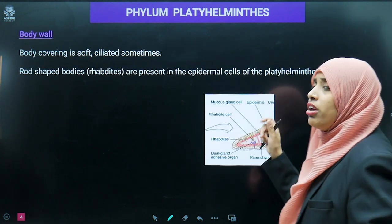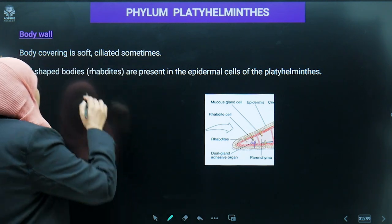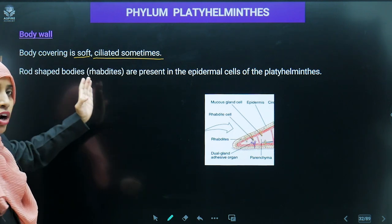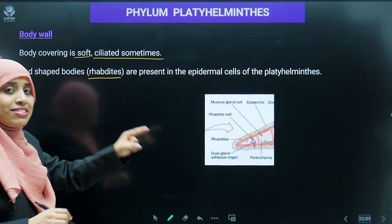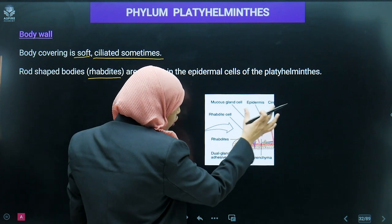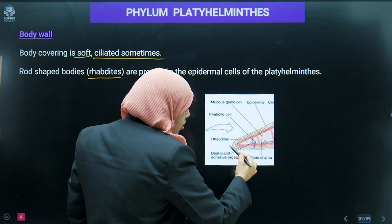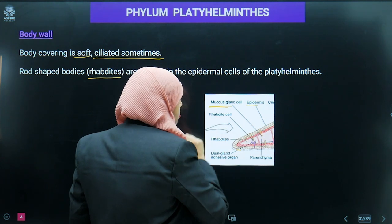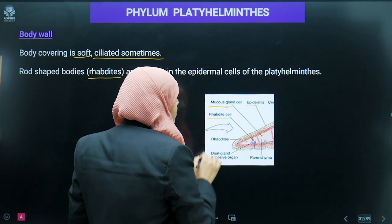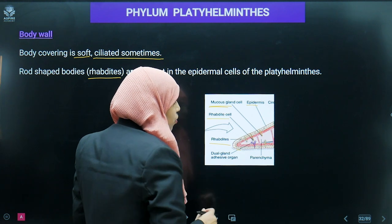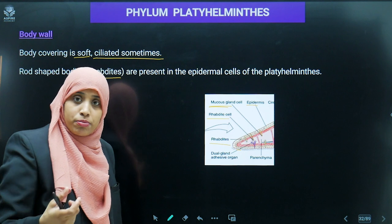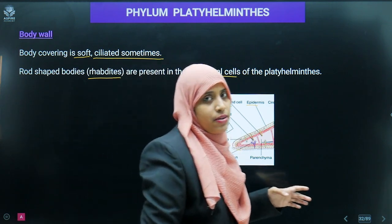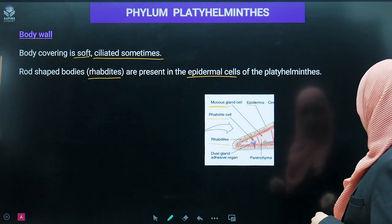Regarding the body wall of platyhelminthes: they are mostly soft, sometimes ciliated. Rod-shaped bodies known as rhabdites are present in the epidermal part. Looking at the epidermal layer: the outermost layer is ectoderm, also called epidermis, which contains mucus gland cells and rhabdite cells. A parenchymatous fluid-filled mesoderm region is also present.